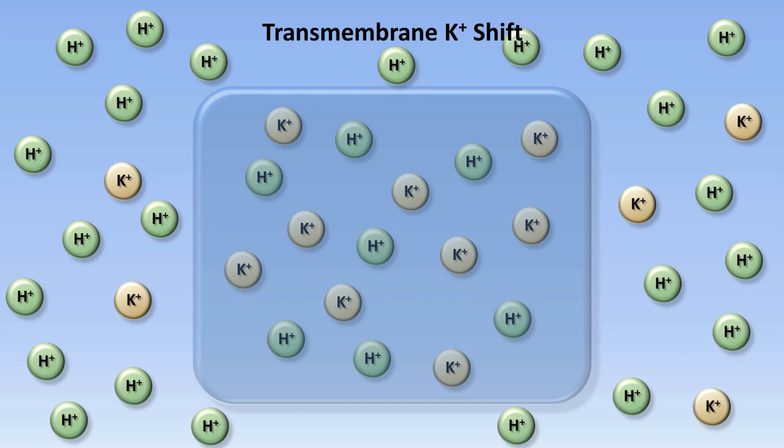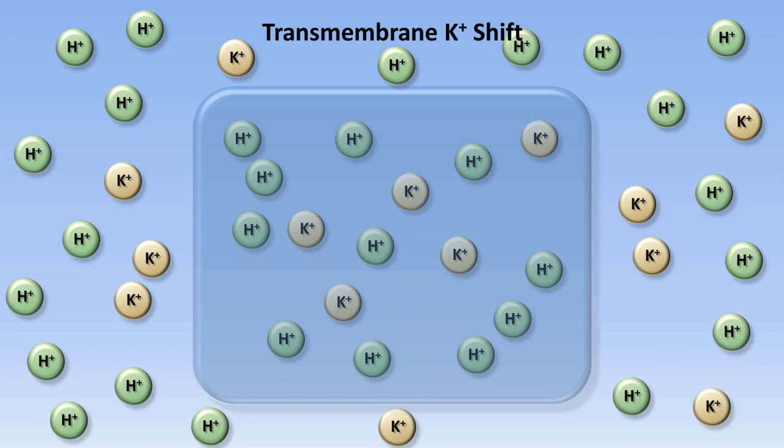These excess extracellular hydrogen ions shift the equilibrium governing their concentration, which begins to drive them into the intracellular space. However, to maintain electrical neutrality, potassium ions shift outward. The exact details of how this process works is not clinically relevant, but while this transmembrane exchange may help to blunt a critical decrease in serum pH, it does so at the expense of causing a high serum potassium concentration known as hyperkalemia.